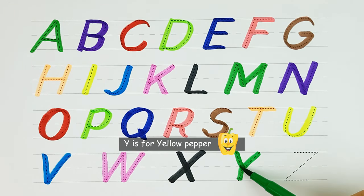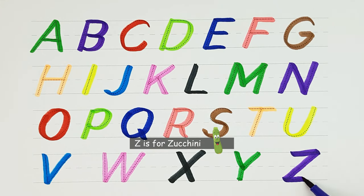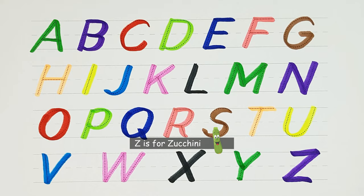Y. Y is for yellow pepper. Z. Z is for zucchini.